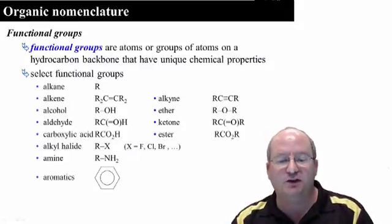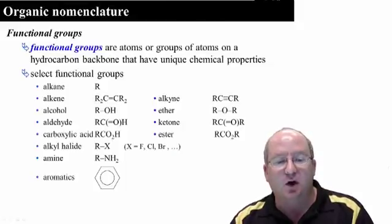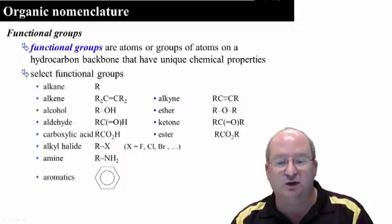Here are some common functional groups involving nitrogen, oxygen, and the halogens. R represents a hydrocarbon backbone. It is also called an alkane.